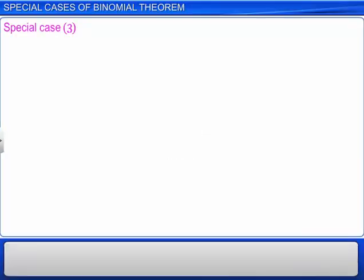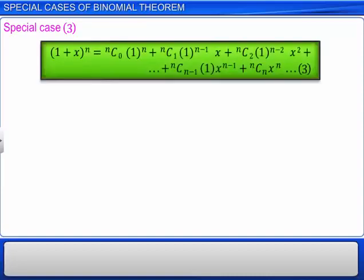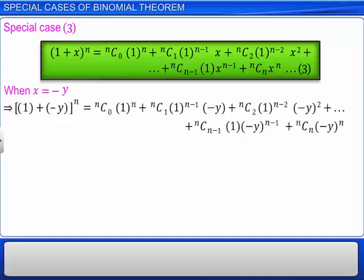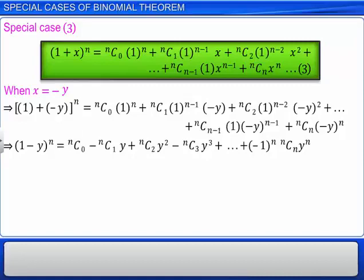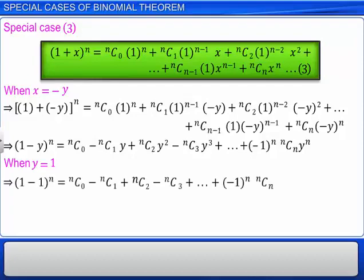Let us understand one more case of binomial expansion. Recall the expansion of 1 plus x whole raised to the power of n. Denote this by equation 3. When x is equal to minus y, equation 3 can be written as shown. The simplified form of the expansion is shown here. Now, when y is equal to 1, we get 1 minus 1 whole raised to the power of n is equal to nC0 minus nC1 plus nC2 minus nC3 and so on up to minus 1 whole raised to the power of n into nCn.